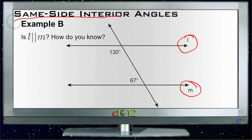So if 130 plus 67 equals 180, then they're parallel. But obviously this doesn't—this is 197, and 197 is definitely not equal to 180.